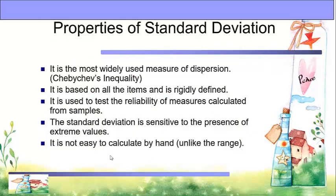Properties of standard deviation: it is the most widely used measure of dispersion. It is based on all items and is rigidly defined. It is used to test the reliability of measures calculated from samples. The standard deviation is sensitive to the presence of extreme values, and it is not easy to calculate by hand, unlike the range.